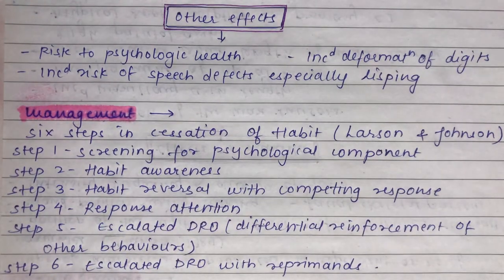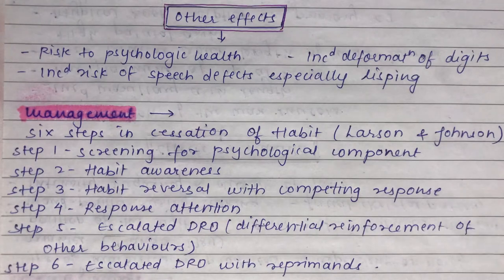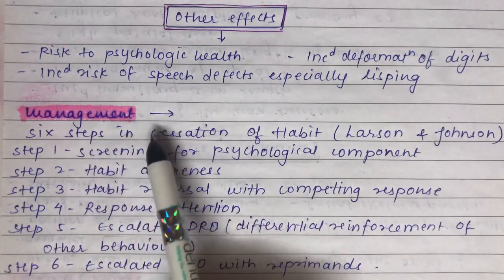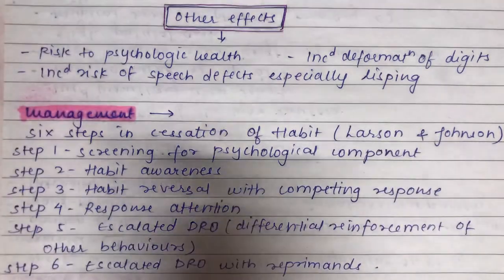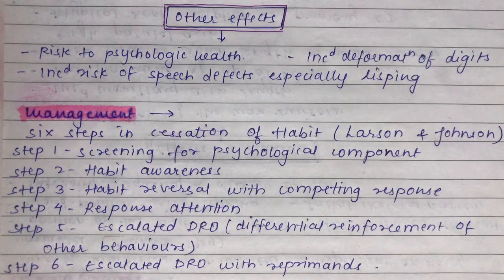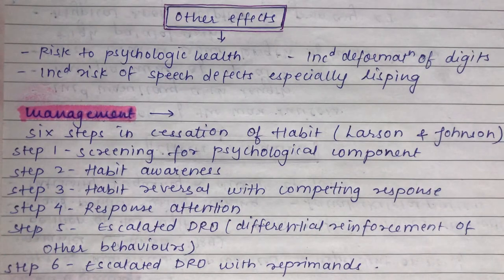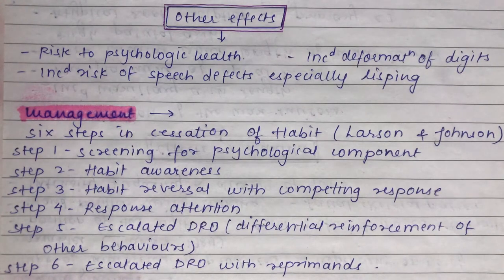Moving to management: the strategy should be started when the child shows any signs of the habit or when a family tendency is discovered. Larson and Johnson described six steps in habit cessation. Step 1 is screening for psychological components. Step 2 is giving habit awareness. Step 3 is habit reversal with a competing response. Step 4 is response attention — monitoring the response after habit reversal.